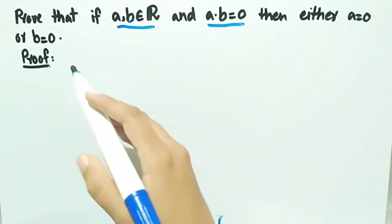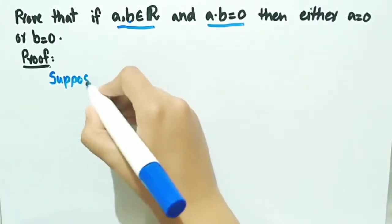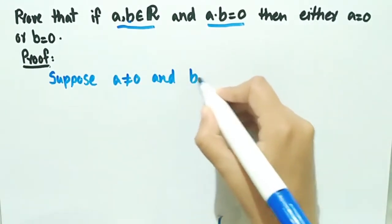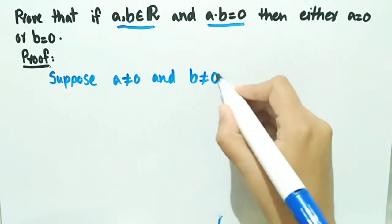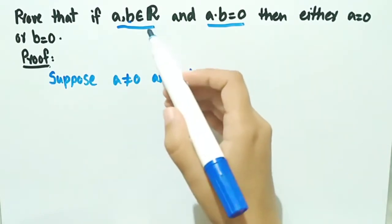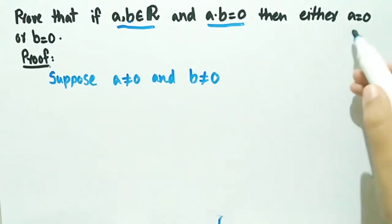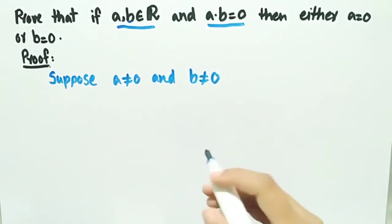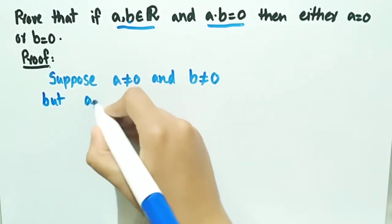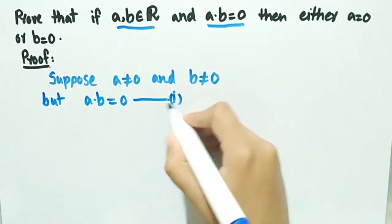We suppose that a and b are both non-zero. We have supposed this because in the given data it is stated that a and b are real numbers, but it is not given whether they are zero or non-zero. Instead, we have to prove that one of them is zero. So we suppose both are non-zero, but it is given that the product ab = 0 — let this be equation number one.